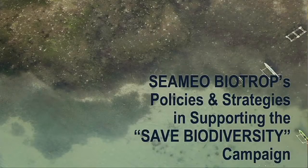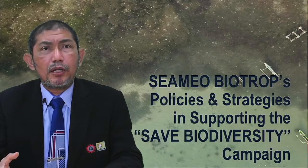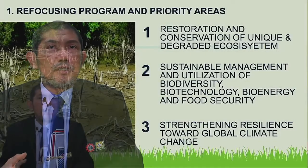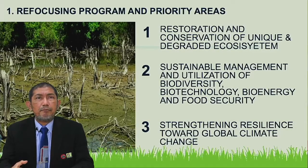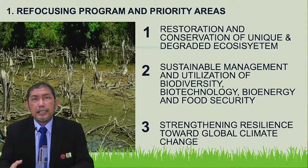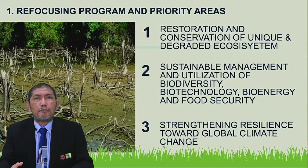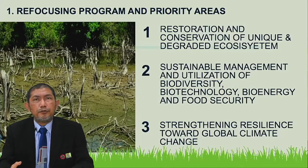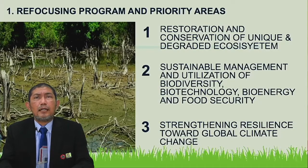Now we arrive at the Simeo Biotrop policy and strategies in supporting the safe biodiversity campaigns. Simeo Biotrop is committed through policies and strategies in supporting these campaigns. The refocusing and priority areas are translated into three Simeo Biotrop main programs: restoration and conservation of unique and degraded ecosystems; sustainable management and utilization of biodiversity, biotechnology, and food security; and strengthening resilience towards global climate change.